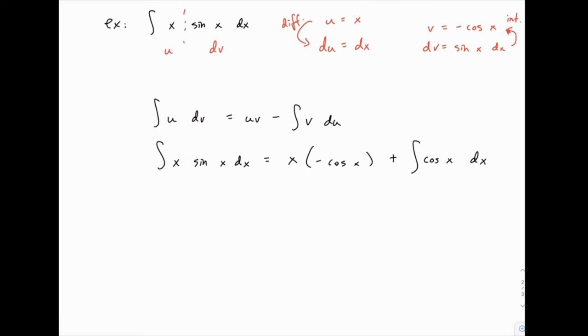So we're pretty much done, we just have that one step to do. So I'm going to rewrite this as negative x cosine of x. And then remember that the integral of the cosine function is the sine function. So we have plus sine of x plus c. And there's your answer.